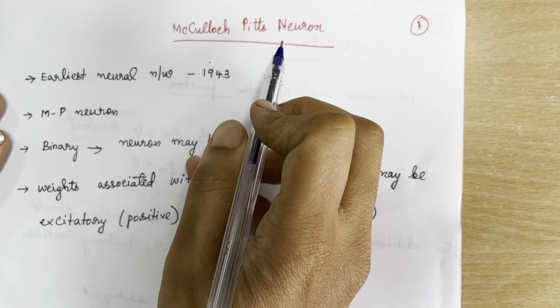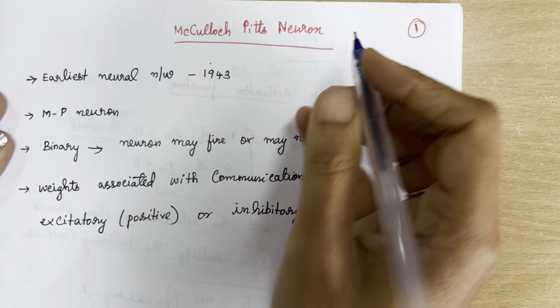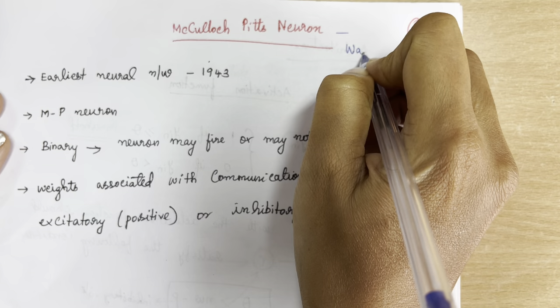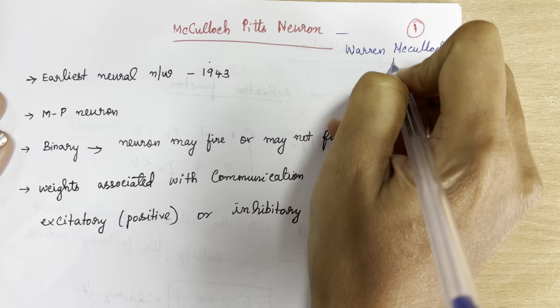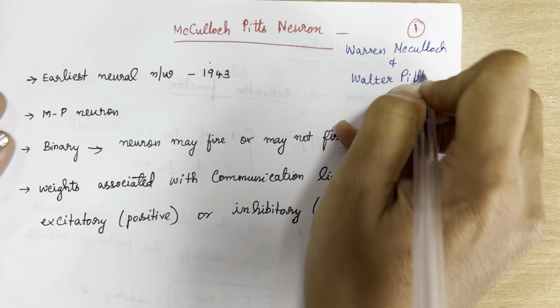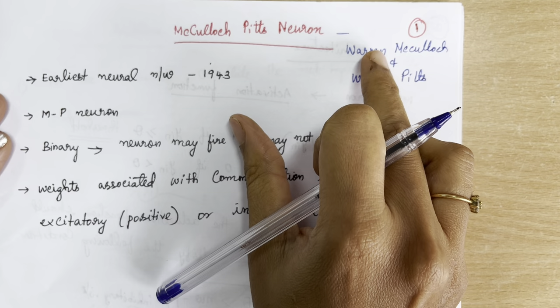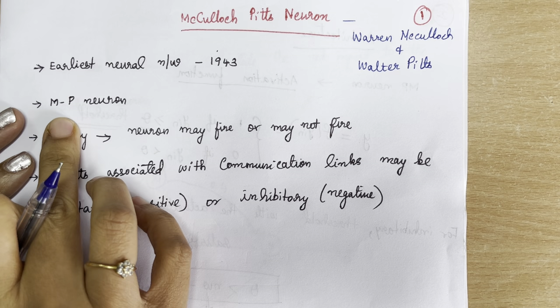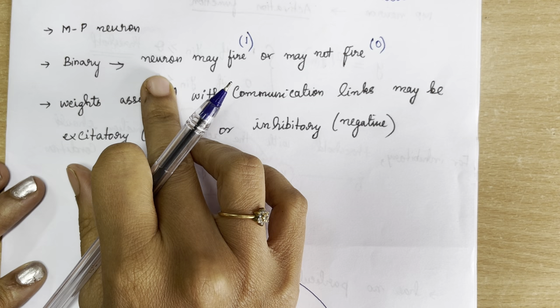Good morning everyone. Today we are going to discuss the McCulloch-Pitts neuron. This is the first mathematical model of a biological neuron, invented by two scientists Warren McCulloch and Walter Pitts in the year 1943. That is why this neuron has been named after these two scientists McCulloch and Pitts. In short, it can be called the MP neuron.